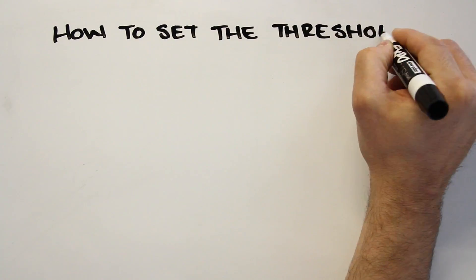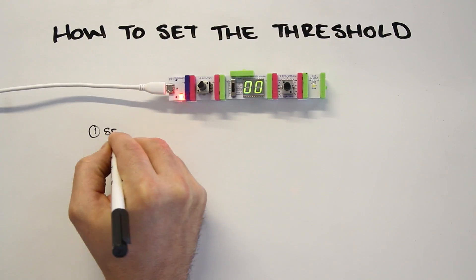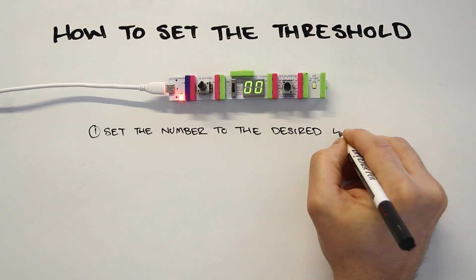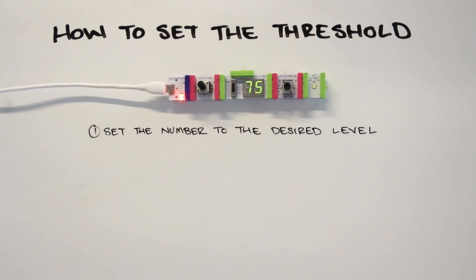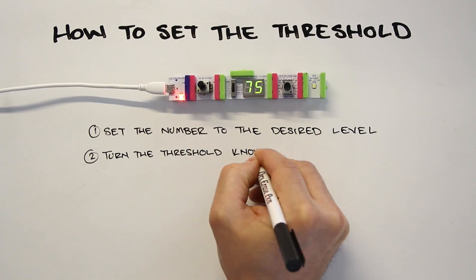Here's how you set the threshold to a specific level. First, use the dimmer to turn the number to your desired level. Then, turn the threshold all the way up.